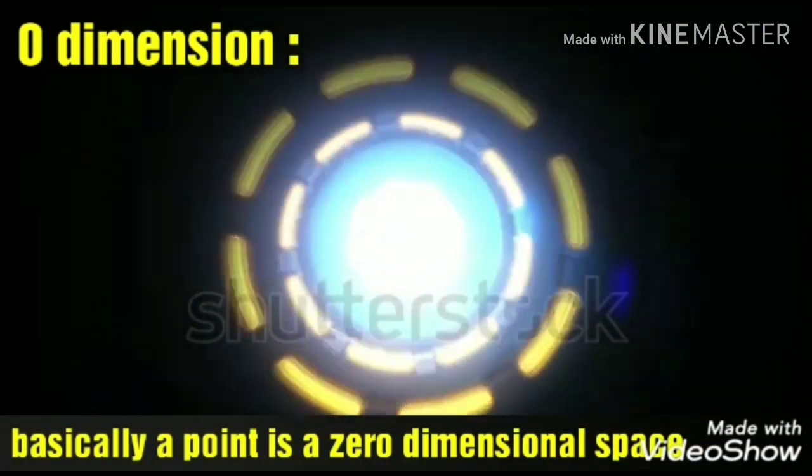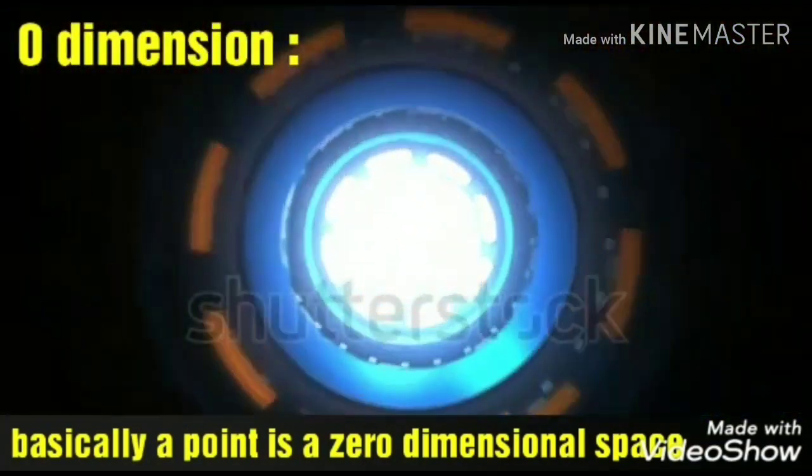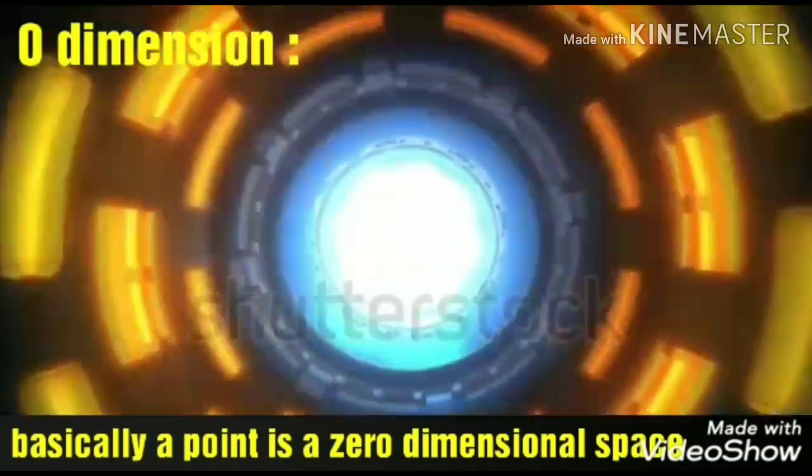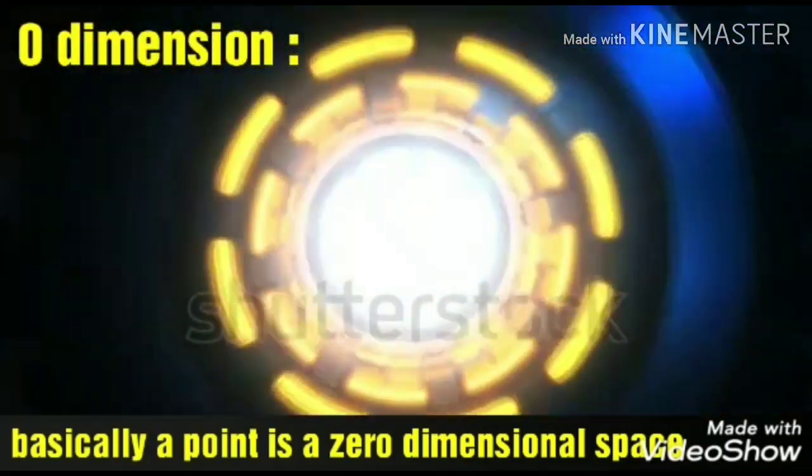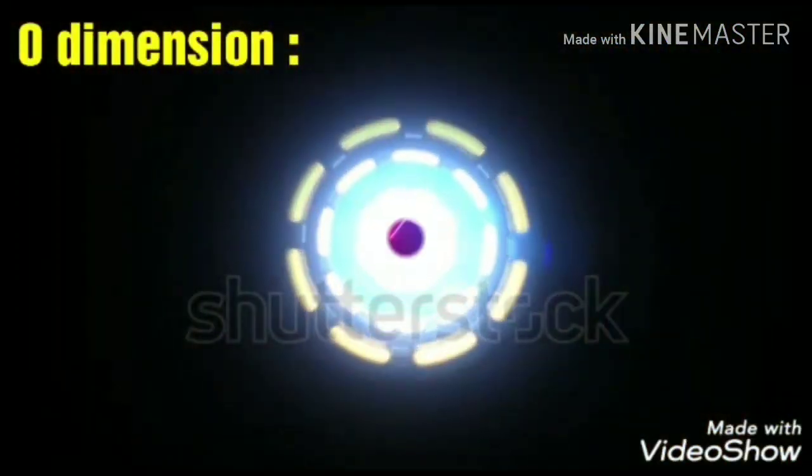First comes the zero dimension. Zero dimension or nil dimensional space is basically a point. A point that you plot on a paper with a very sharp pencil is zero dimensional. It doesn't have any mathematical point.